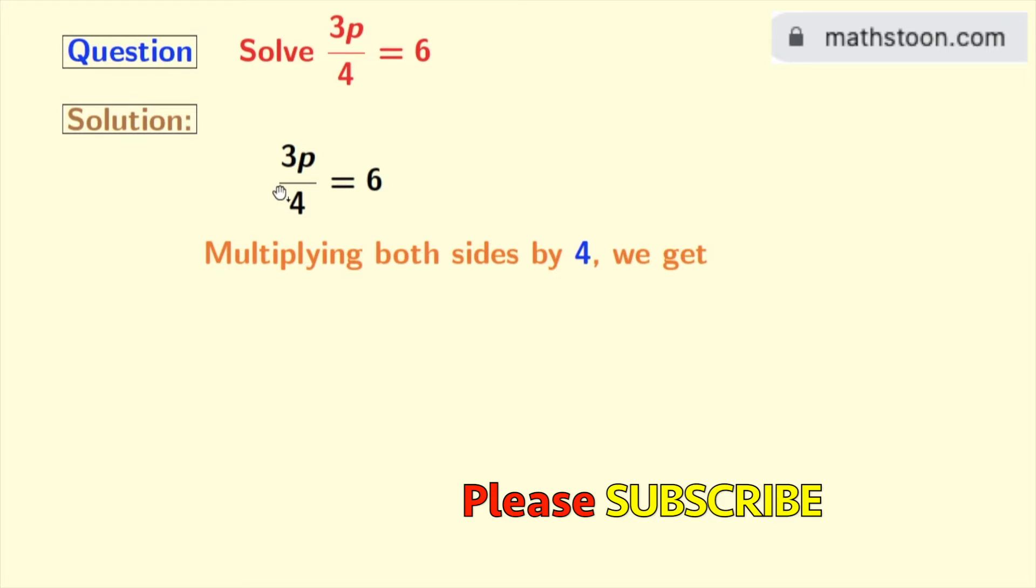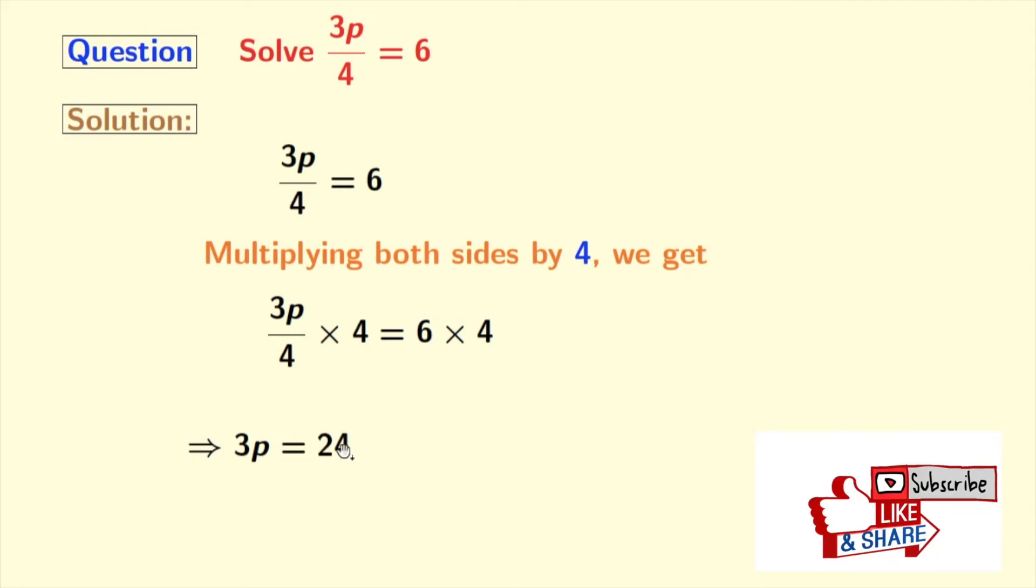Doing that we get 3p by 4 times 4 is equal to 6 times 4. Now in the left hand side, 4 gets cancelled and we are left with 3p. And in the right hand side, 6 times 4 means 24.